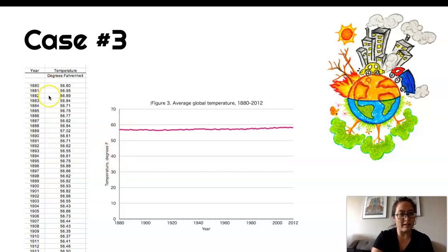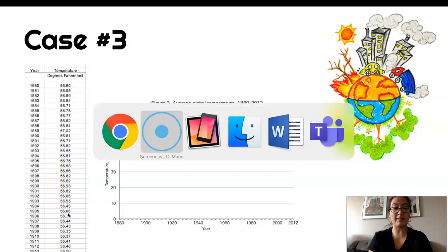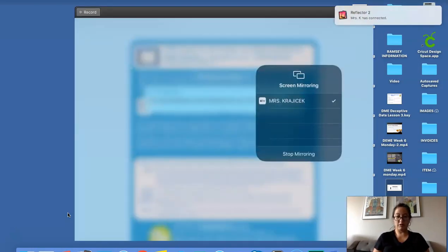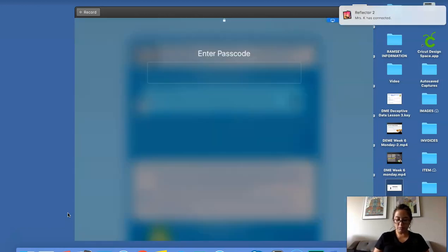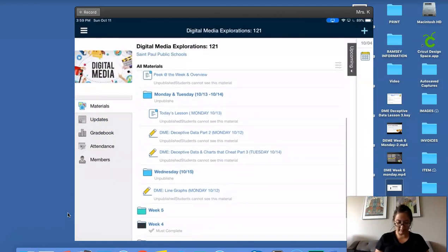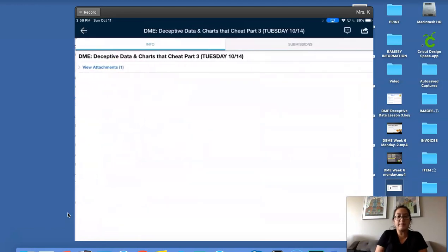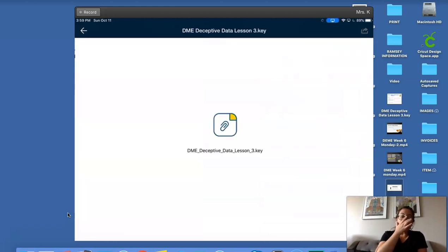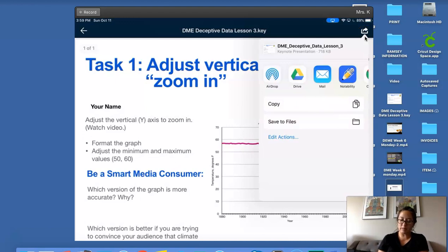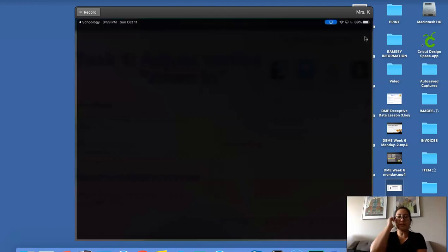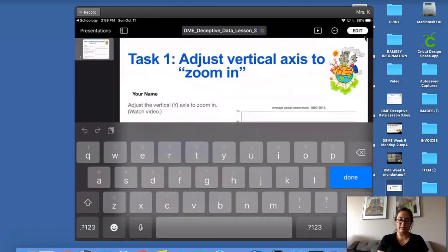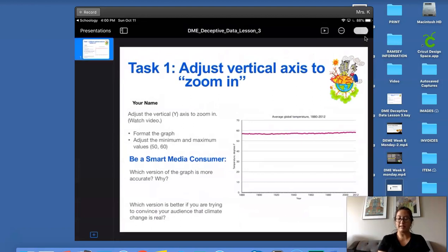I'm not going to make you type in each of these data points because that would take forever. So instead, what I'm asking you to do is to open up Schoology. Let me get mine showing here. Open up Schoology and go to week six. And I want you to look at Tuesday, which is Deceptive Data Charts That Cheat Part 3 for Tuesday. And I want you to open up the attachment because I've created this graph for you. Use this little button up here so that you can open it in Keynote. When you get it into Keynote, please rename it with your first and last name and the class period so that I don't have 87 of DME Deceptive Data Lesson 3s. Rename it, add your first and last name and what period you are in, and then click Edit so that we can get in and change stuff.